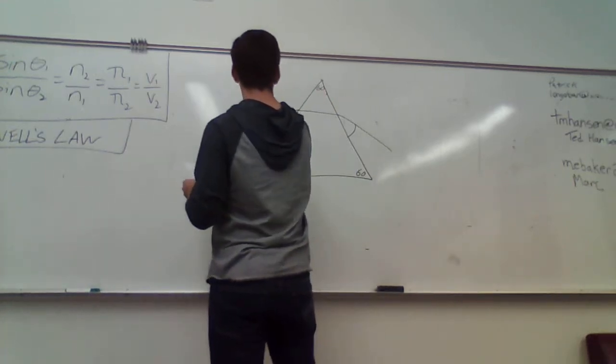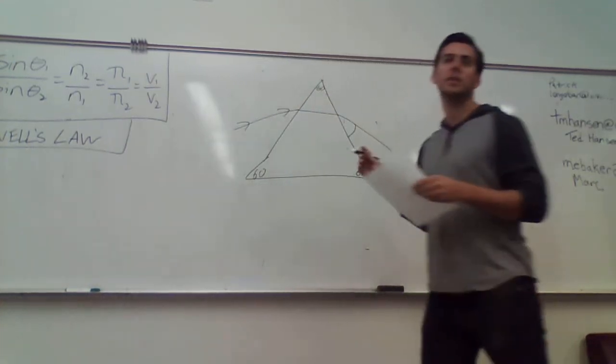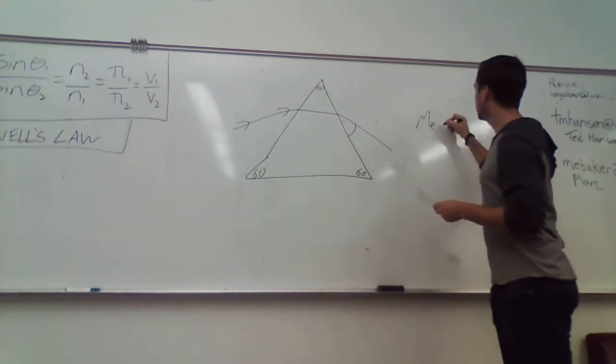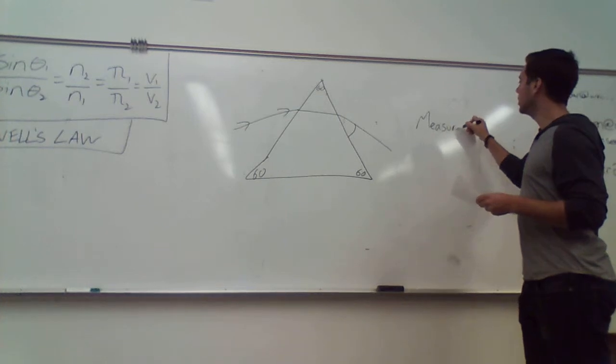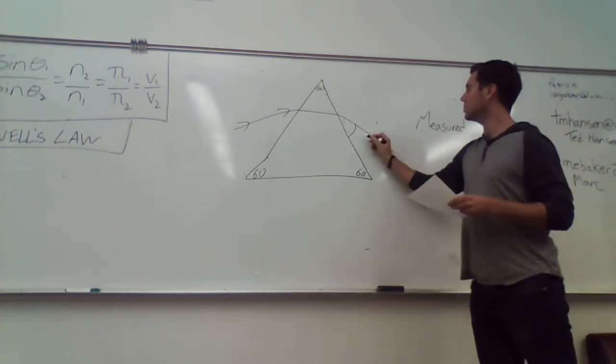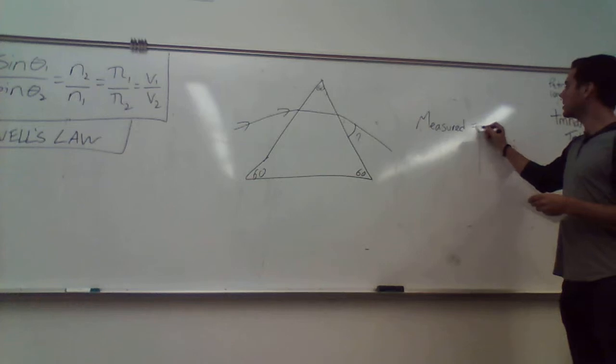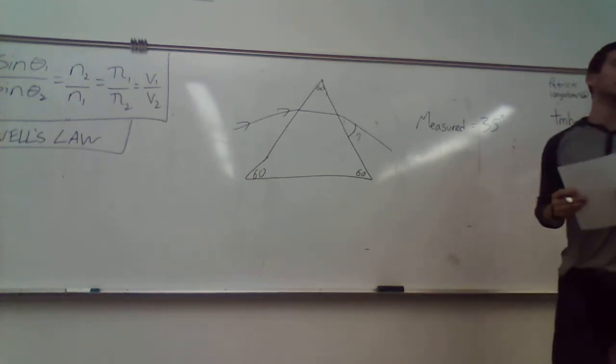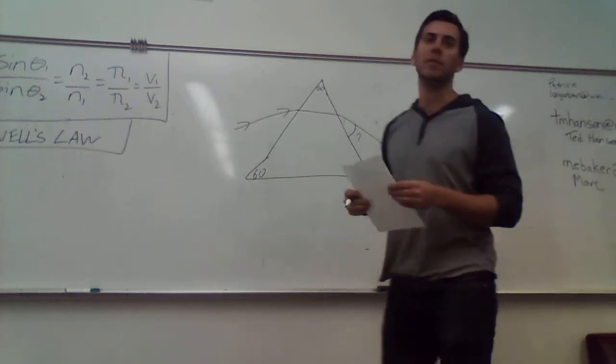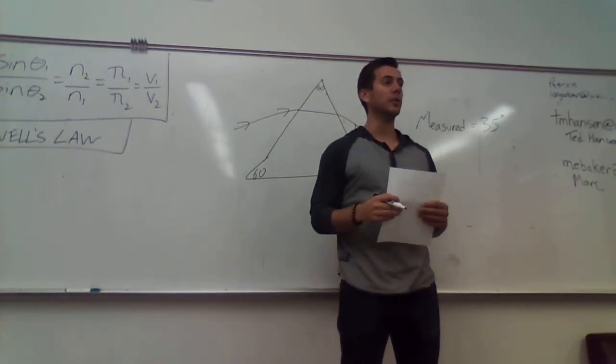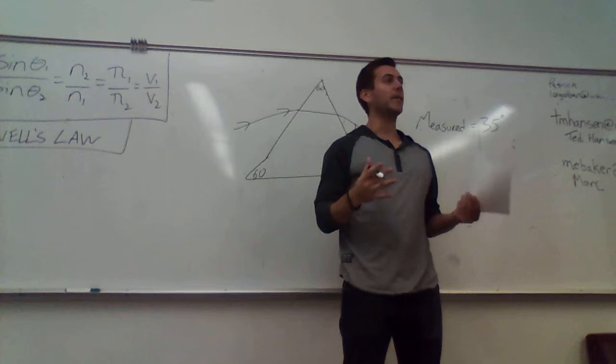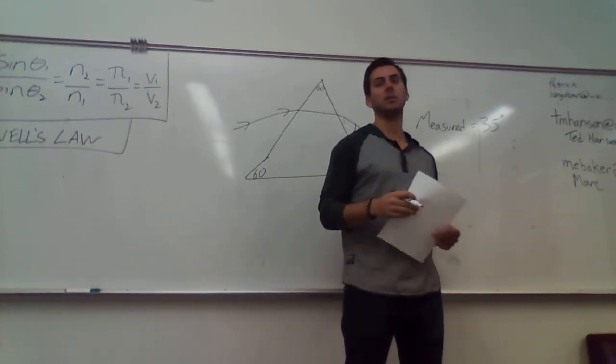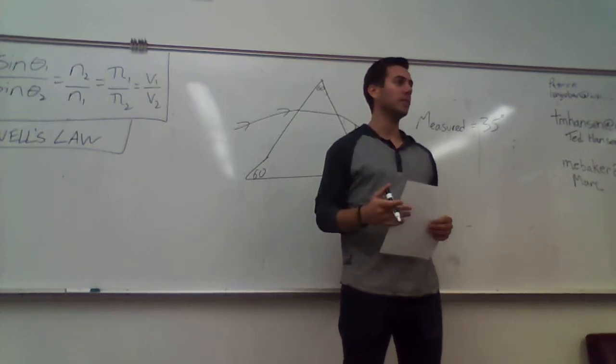35? 35 degrees? Yeah, you're seeing head nods? Okay. So our measured angle, we'll call this question mark, our measured angle is 35 degrees. Now the purpose of this exercise is to use the calculations that we've learned throughout the beginning of this lecture to ultimately get that same answer. So then we can find a bridge between our quantitative results and our qualitative results.